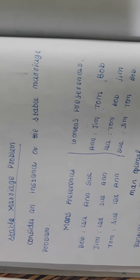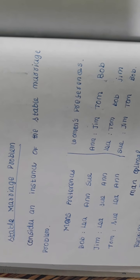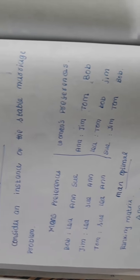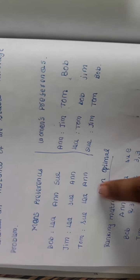Friends, in this video, we will solve a stable marriage problem. This is a very easy and interesting problem. First, what is it? Men's preference and women's preference.